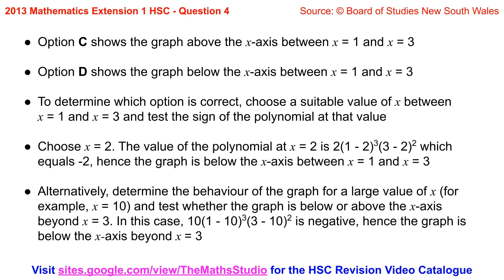The value of the polynomial at x equals 2 is 2 times 1 minus 2 all cubed times 3 minus 2 all squared which equals negative 2. Hence the graph is below the x-axis between x equals 1 and x equals 3.